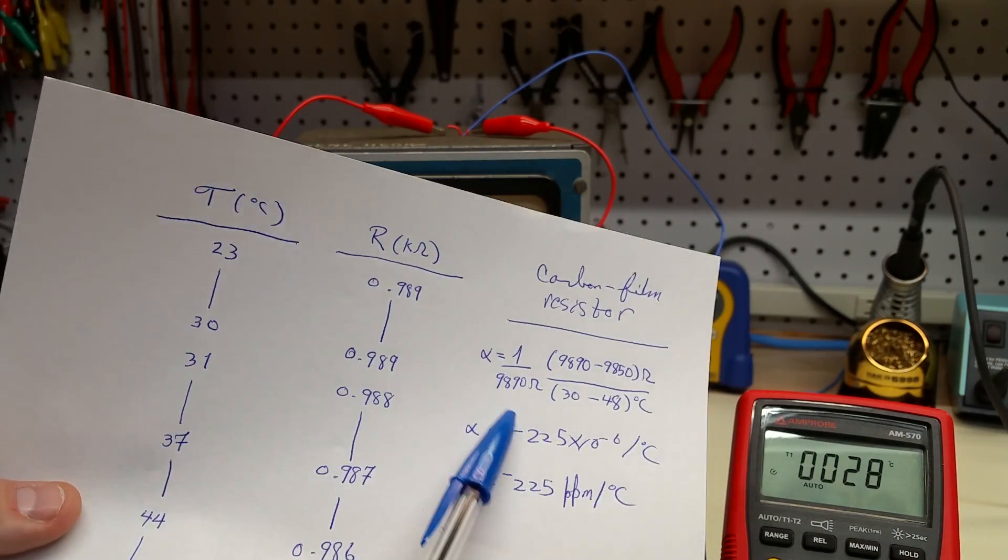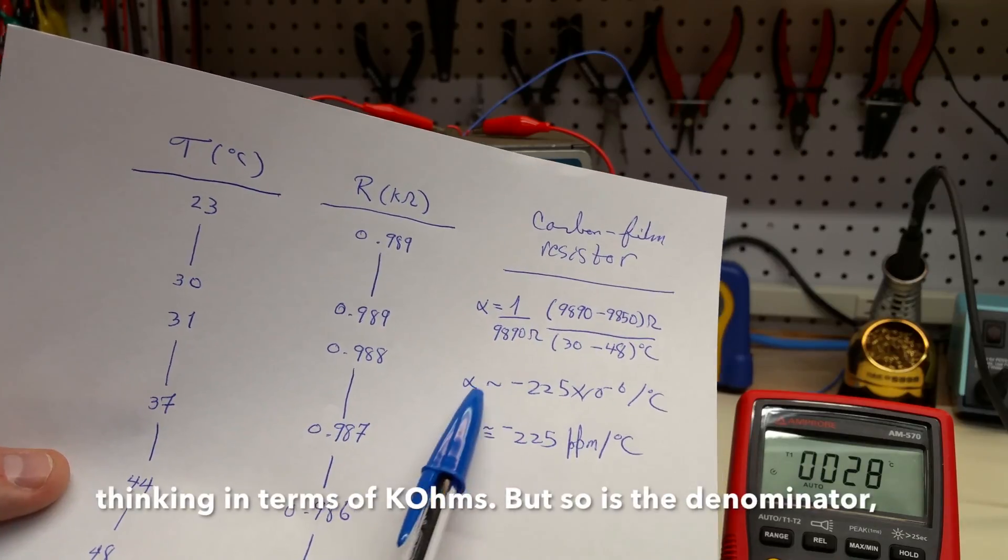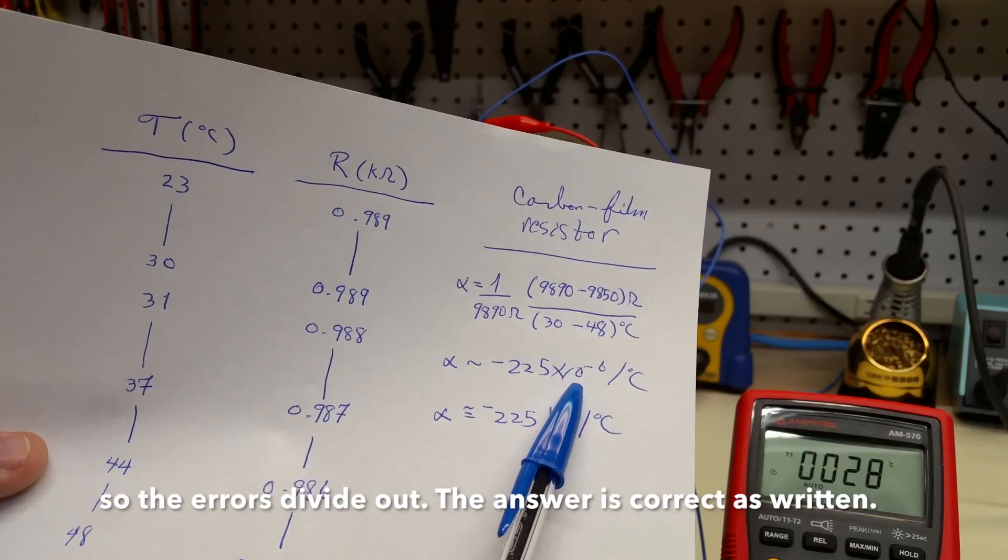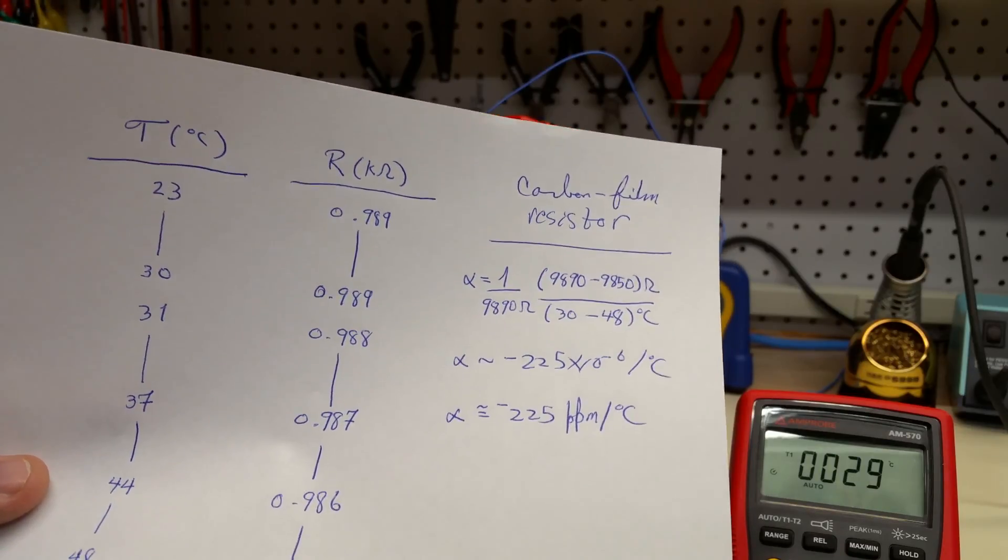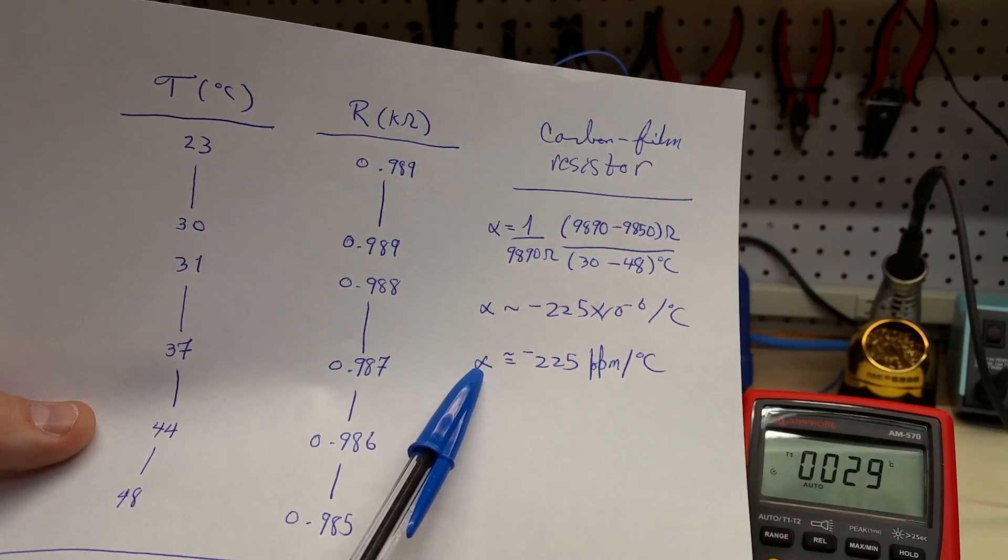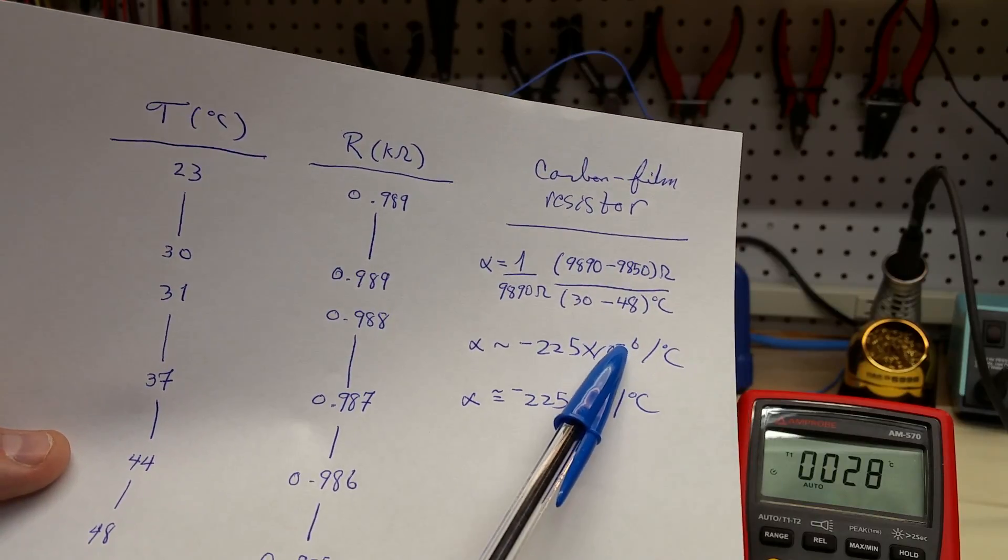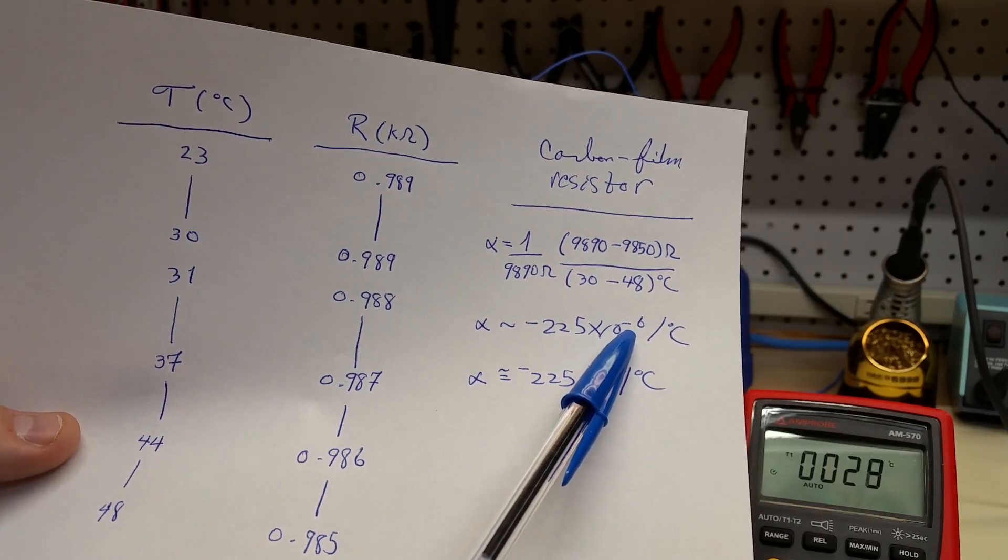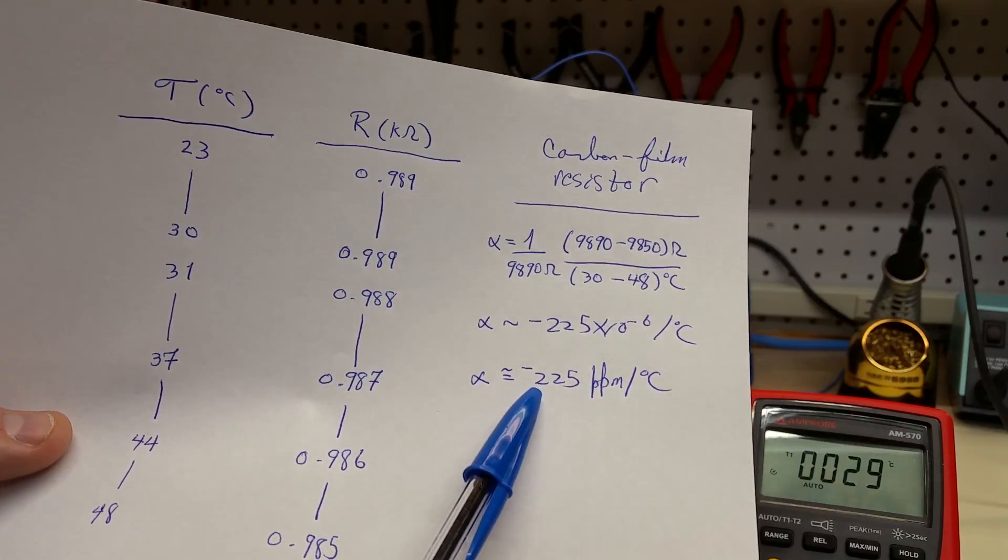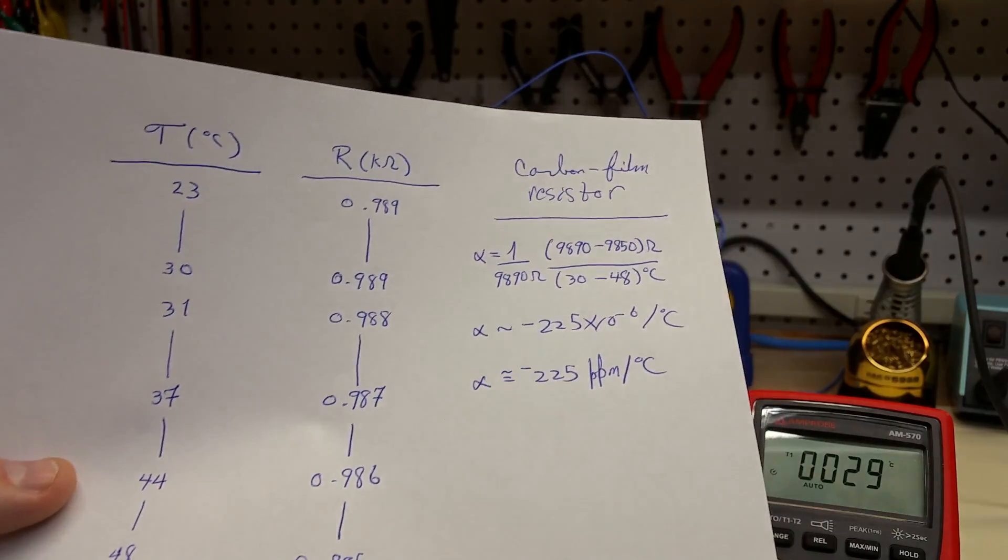And so when you do the math there, we have to evaluate this expression. And that turns out to be negative 225 times 10 to the minus 6 per degree C. And it's customary to state the temperature coefficient of resistance in terms of parts per million per degree C. So this is easy since this is already 10 to the minus 6, which is million. Alpha here that we've estimated to be negative 225 parts per million per degree C.